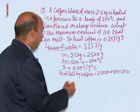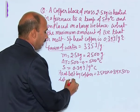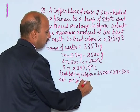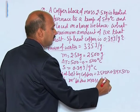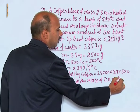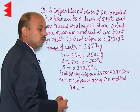Suppose, let m dash be the mass of ice melted. Then you can write m dash into L is equal to...